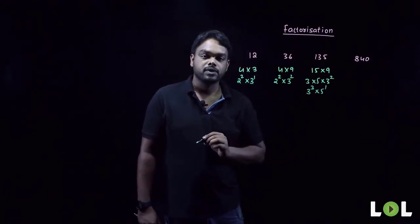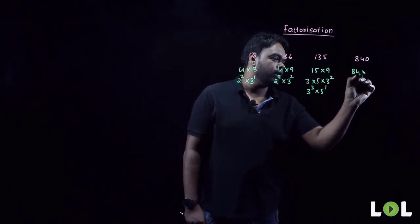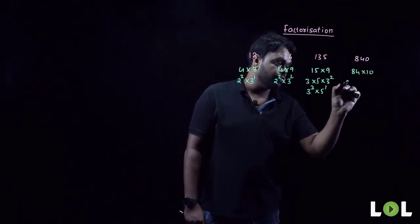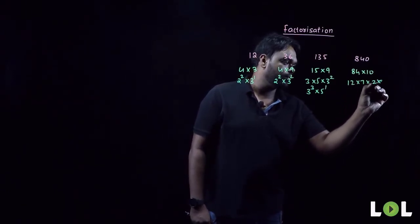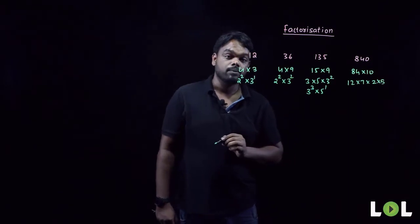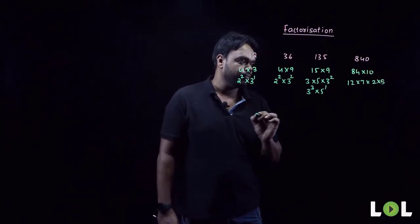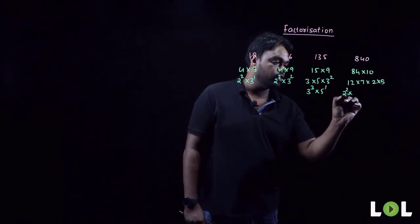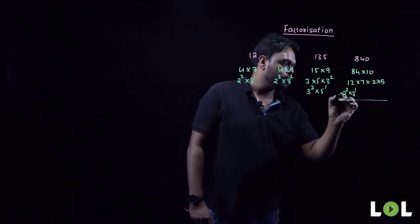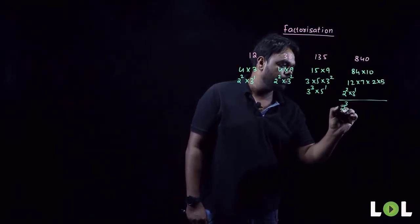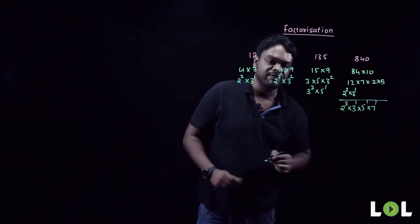For 840: written as 84 into 10, where 84 is 12 into 7 and 10 is 2 into 5. Since 12 is 2 squared into 3, combining gives 2 cubed into 3 to the power 1 into 5 to the power 1 into 7 to the power 1.